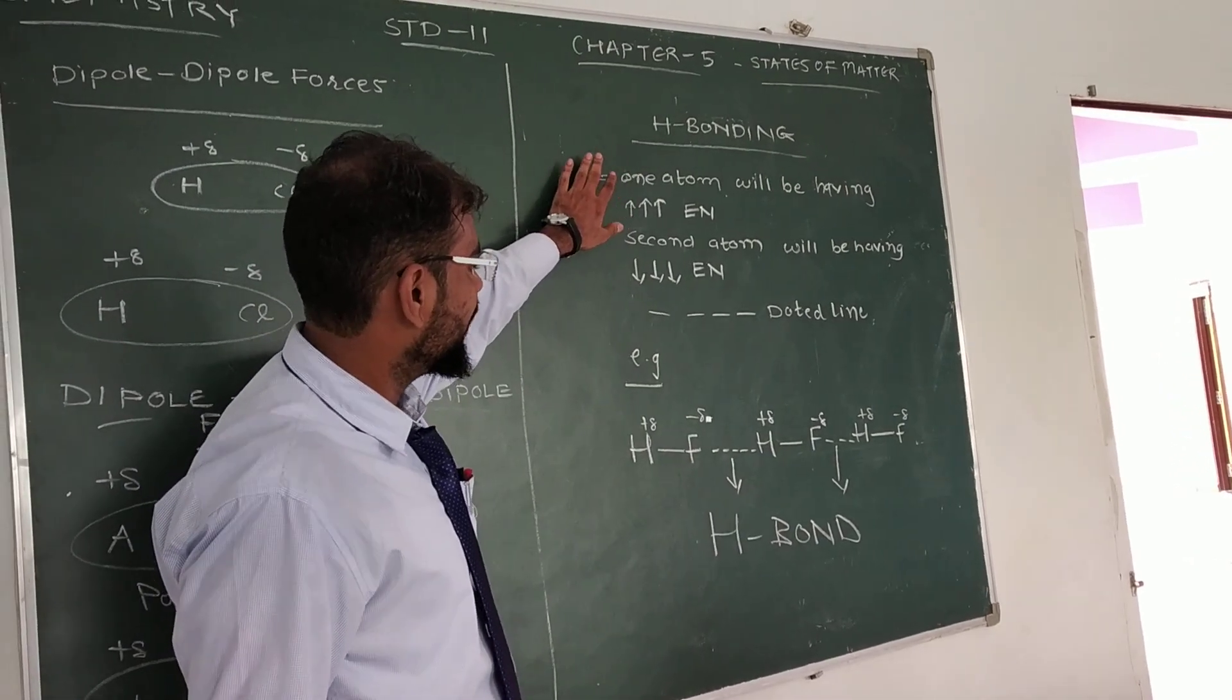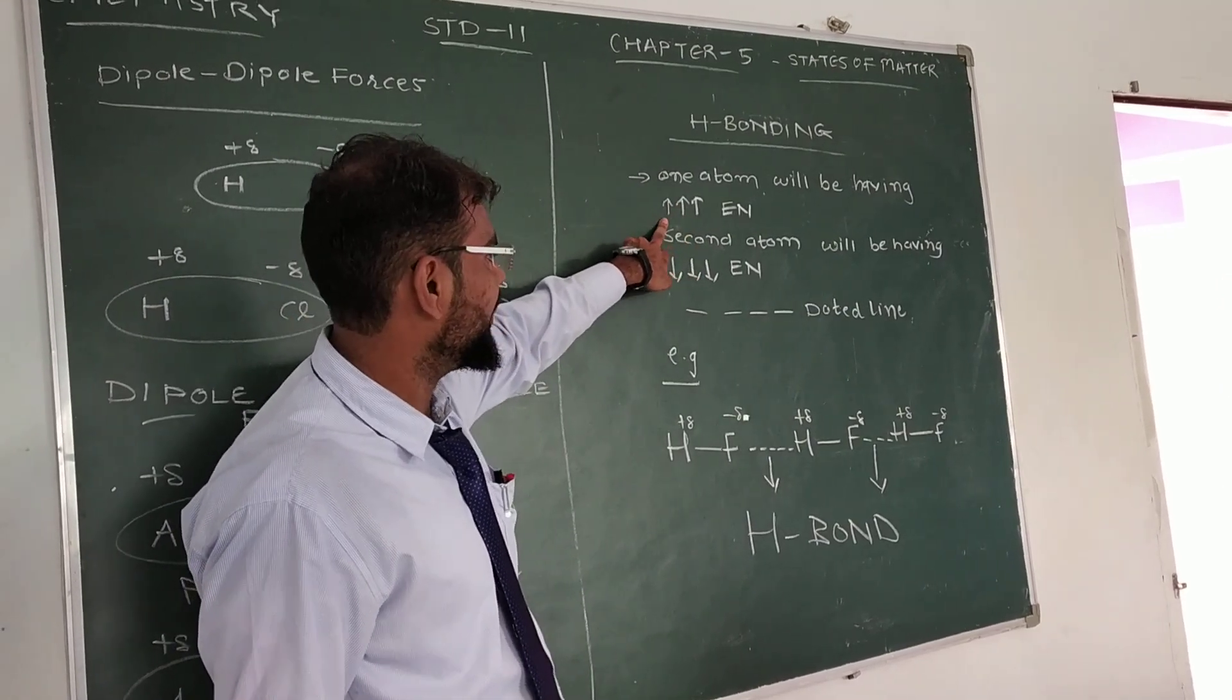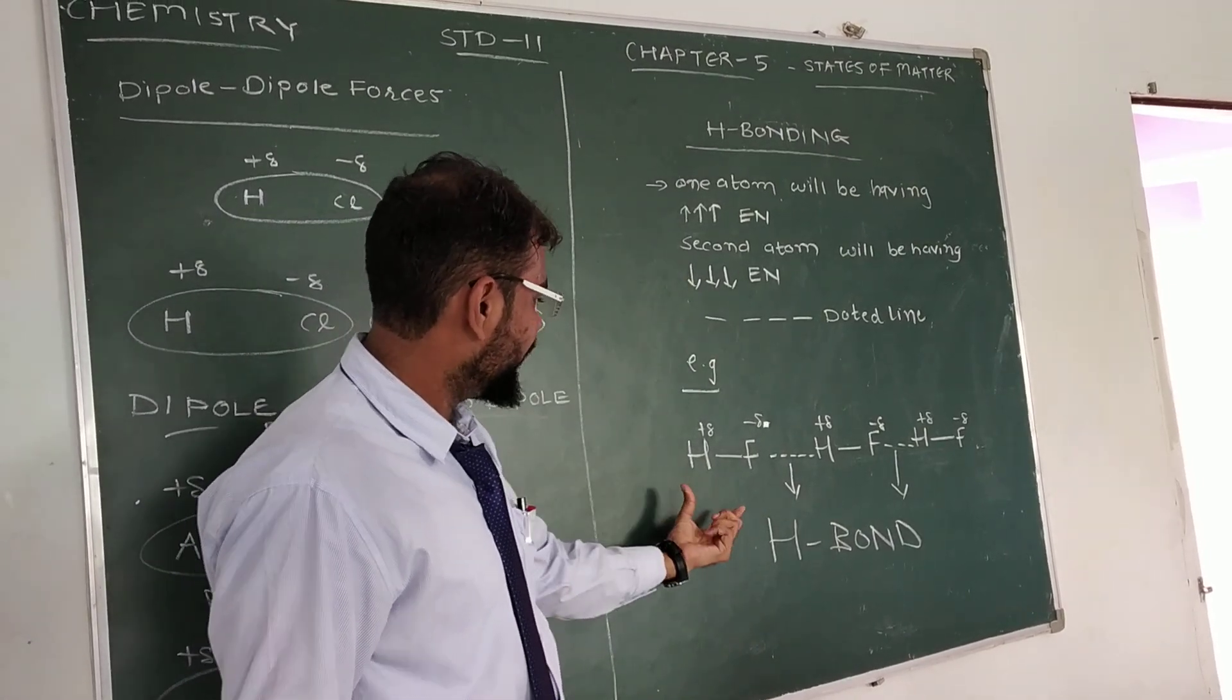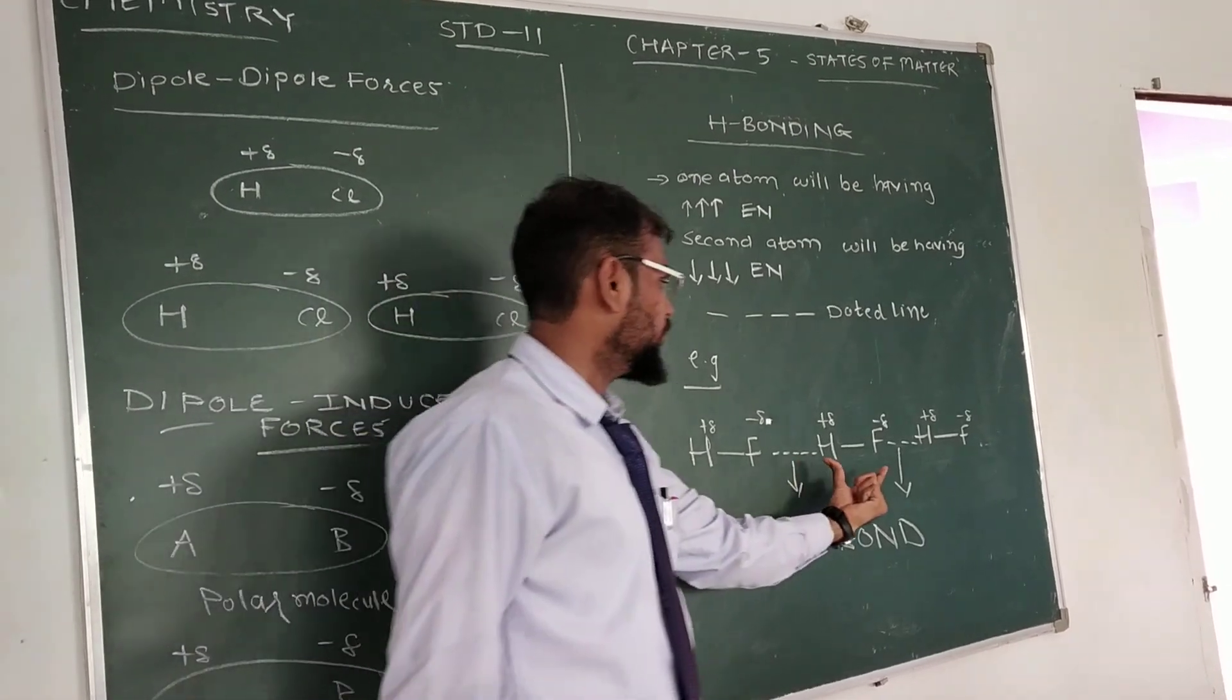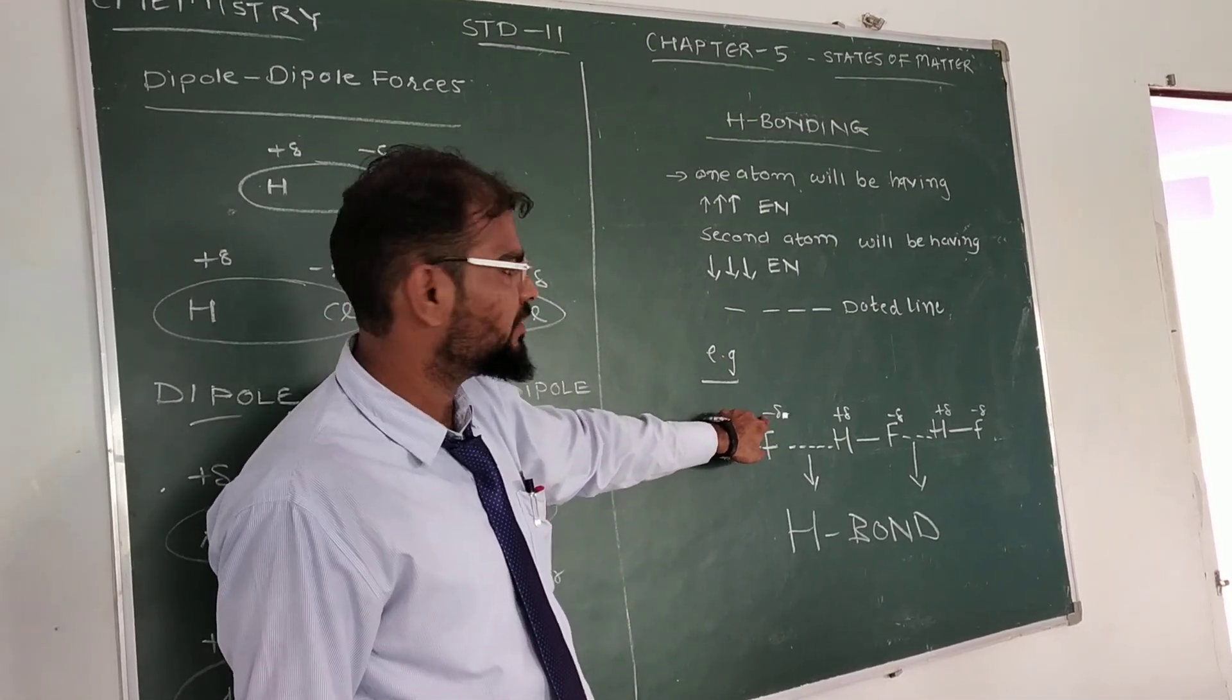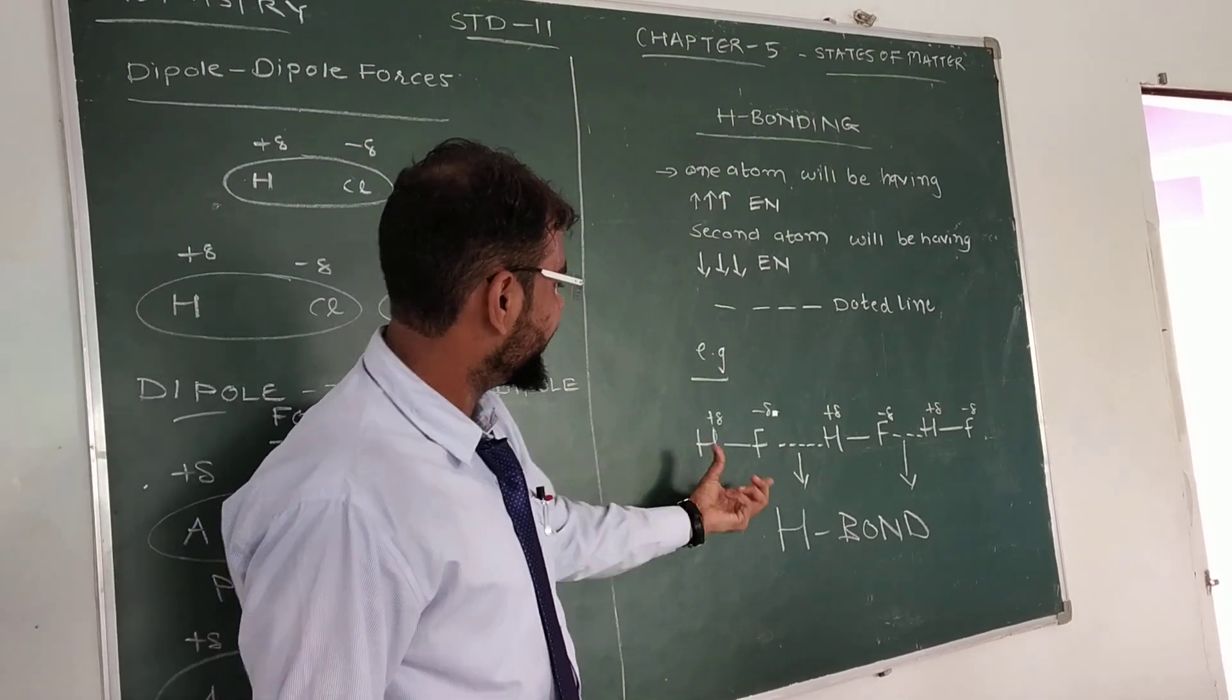Where you will see, if one of the atoms will be having the higher electronegativity, whereas second atom will be having the lower electronegativity. At that time, suppose we can take an example, this is hydrogen fluoride 1, 2 and 3. On fluorine, because of higher electronegativity, it possesses partial negative charge, whereas on hydrogen, partial positive charge is there.